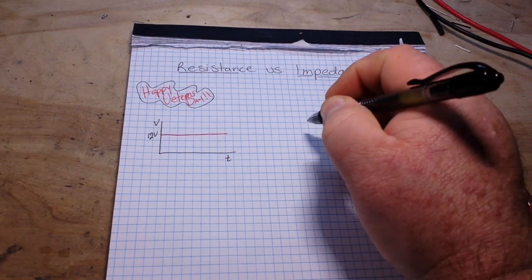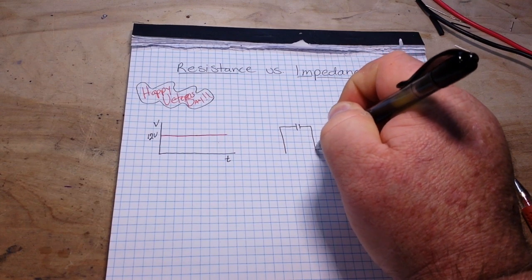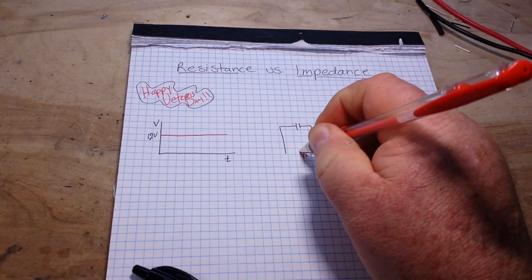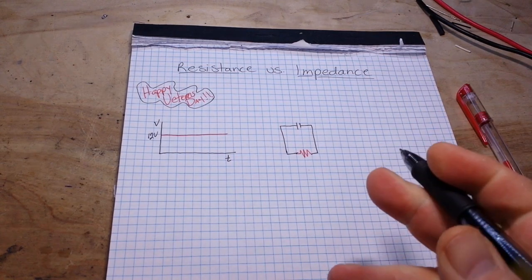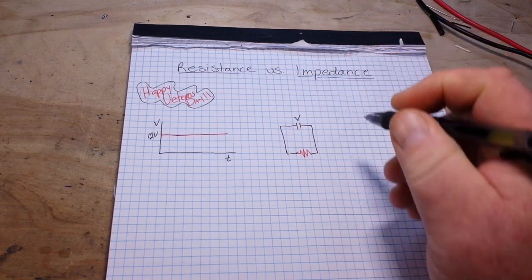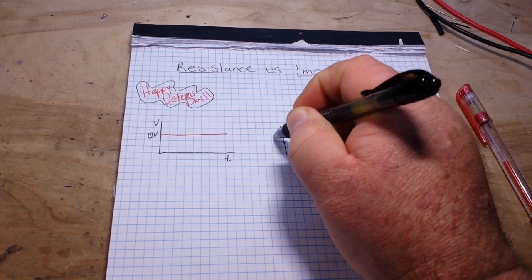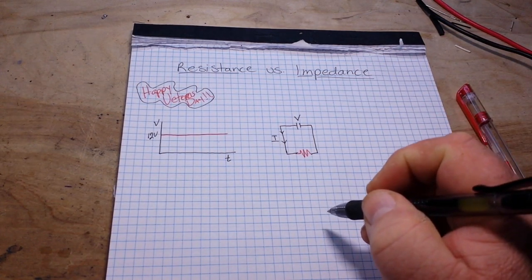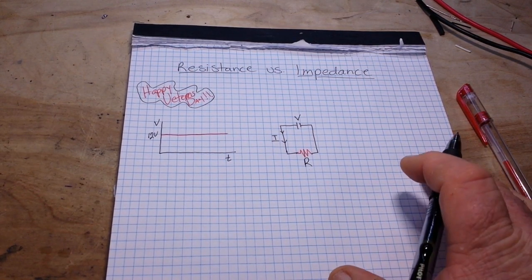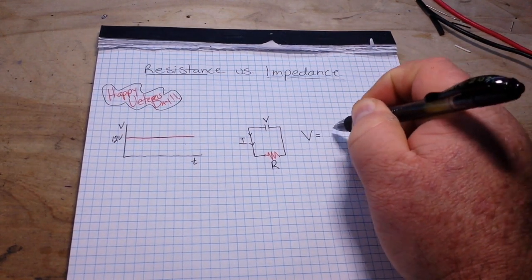So if we then take that battery and we put it across a resistor, what's going to happen? Well, the battery will output a voltage of V. A current of I will begin to flow, and it will meet with a resistance of R. Now, these are all, of course, related with Ohm's Law.